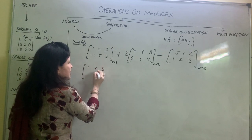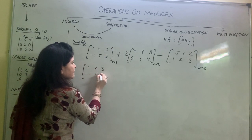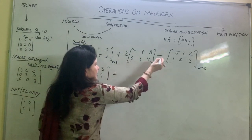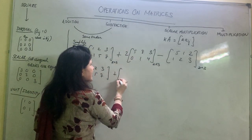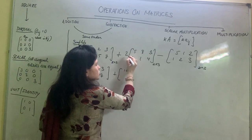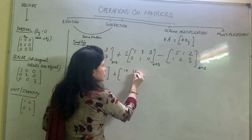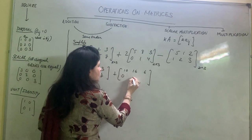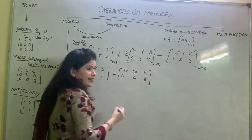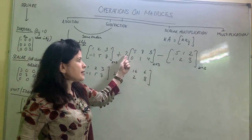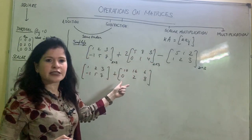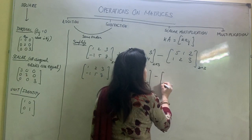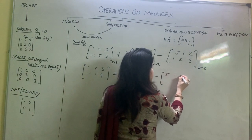I'll do this in two steps. First, handling the scalar multiplication — taking the 2 inside the matrix: 2×5=10, 2×8=16, 2×3=6, 2×0=0, 2×1=2, 2×4=8. The scalar outside has affected the value of every entry inside the matrix.